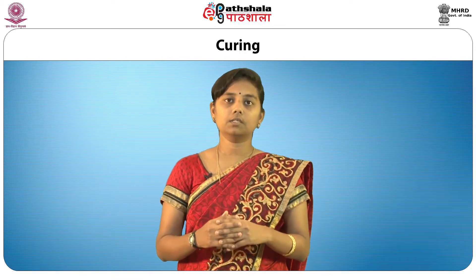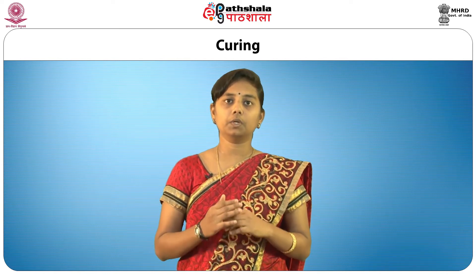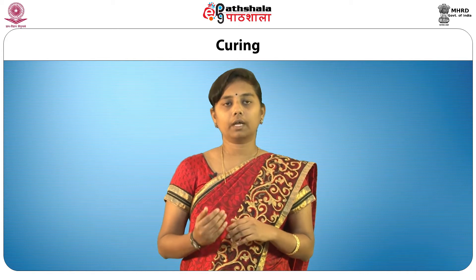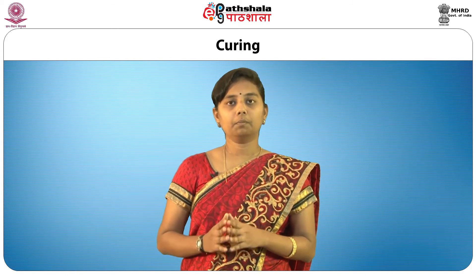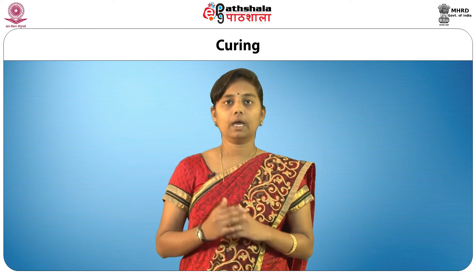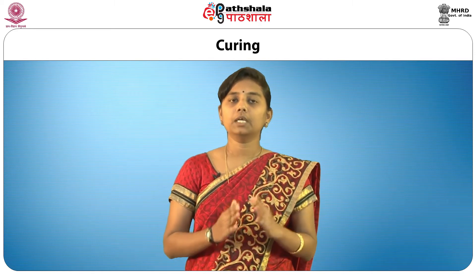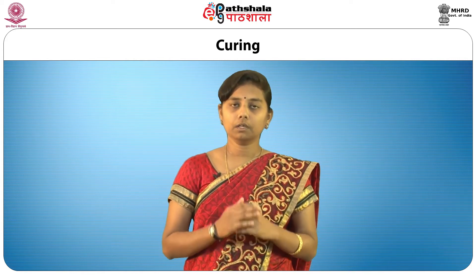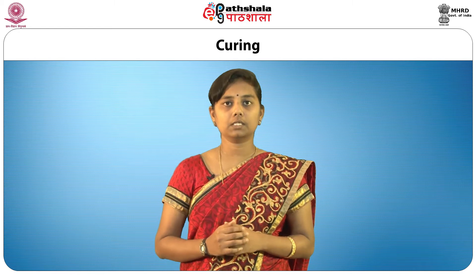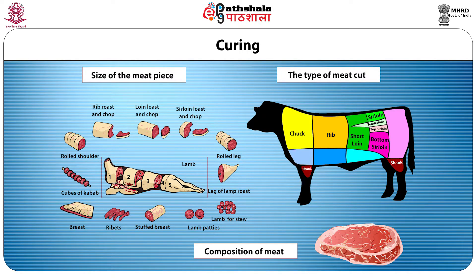First we will discuss about curing and its techniques. Curing is a preservation method usually done for meat and fish. It is carried out by the addition of a combination of salt, nitrate or nitrite, and sugar. Curing is an appropriate method to prevent microbial growth, preserve the original flavors of meat, increase water retention and fat binding properties, and also to keep essential minerals and vitamins. The curing is further continued by other specific processes such as fermentation, drying, and ripening of meat. The length of the curing process depends on the type of meat, cut size, and composition.